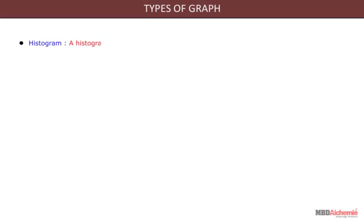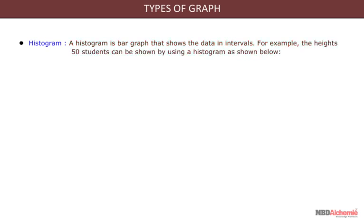Histogram. A histogram is a bar graph that shows the data in intervals. For example, the heights of 50 students can be shown by using a histogram as shown below.